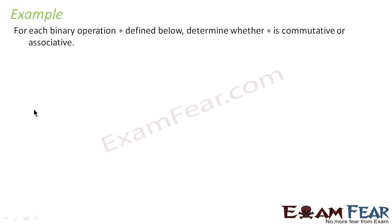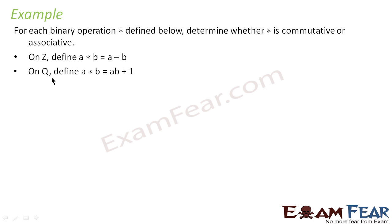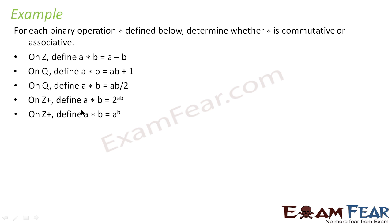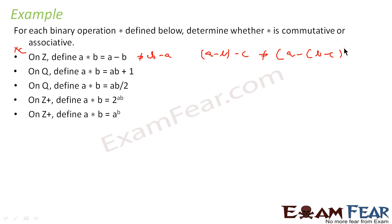For each of these binary operations we determine whether commutativity or associativity holds. The first one: on Z, a * b = a - b. If you flip this, it becomes b - a, and a - b ≠ b - a, so it is not commutative. For associativity, (a - b) - c is not equal to a - (b - c), so it is also not associative.